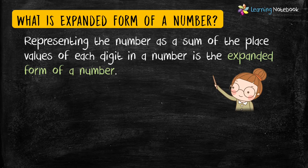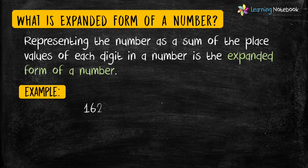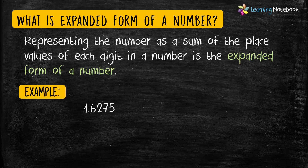Let's take a five-digit number to understand the expanded form. The example is 16,275.